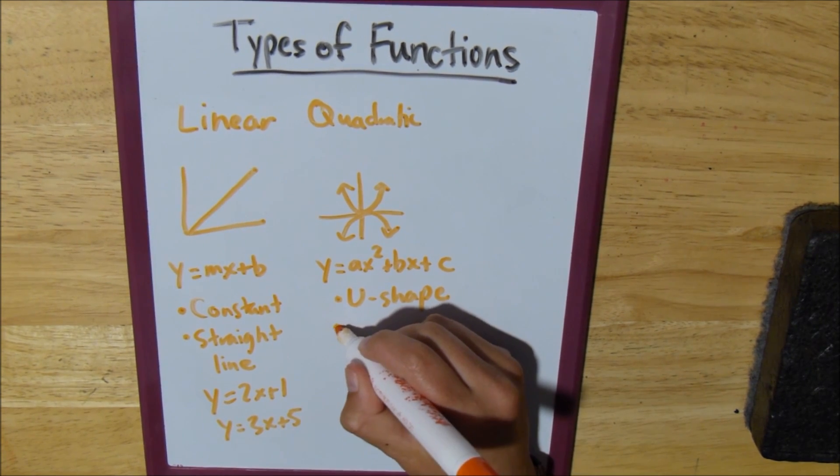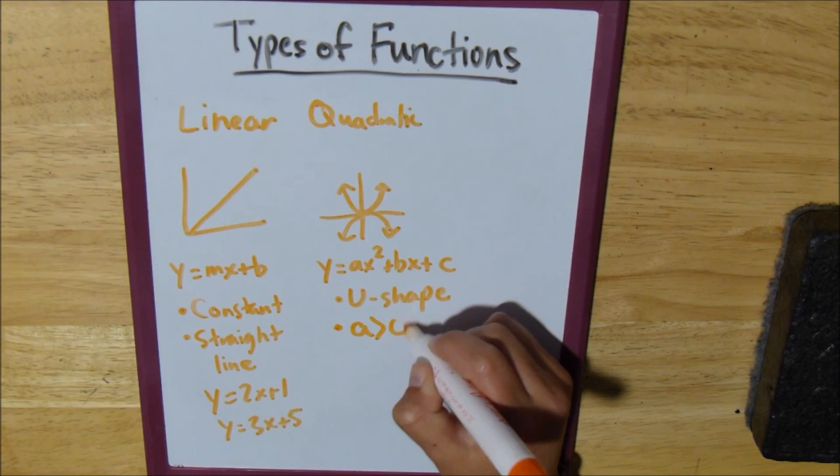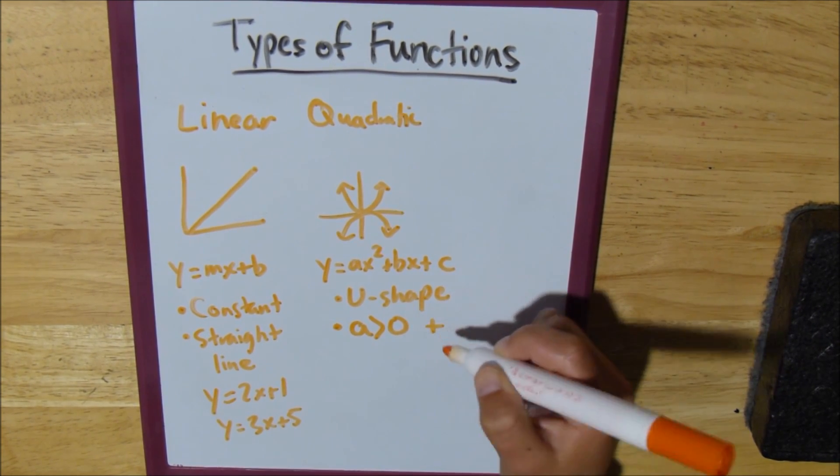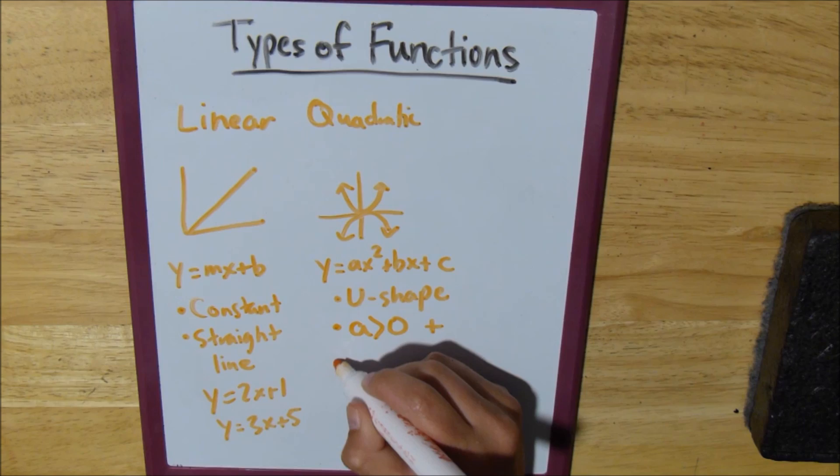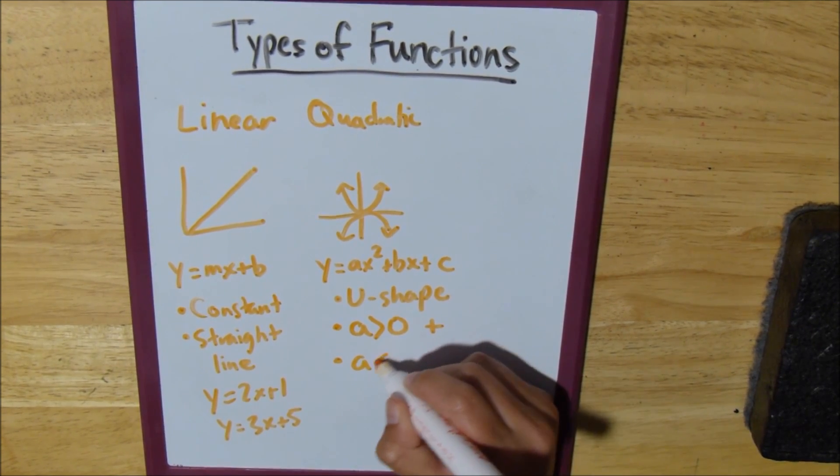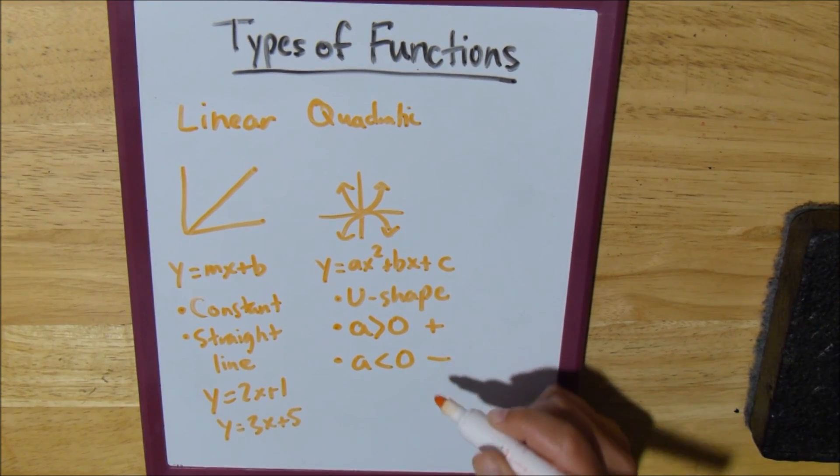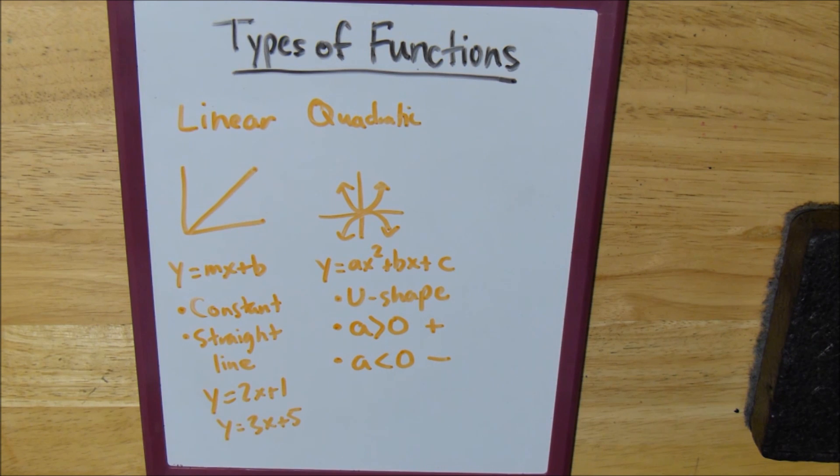And when our a value is greater than zero, it's going to be positive, so it's going to be that happy face. And when our a value is negative, it's going to be that upside down u, that unhappy face. And that's typically how I like to remember that, because when you're positive, you have a smile on your face. When you're negative, you've got a frown.